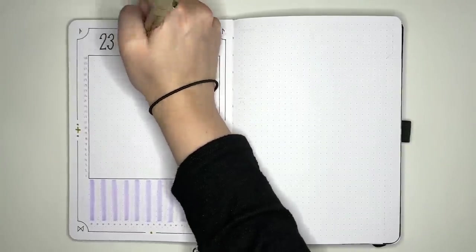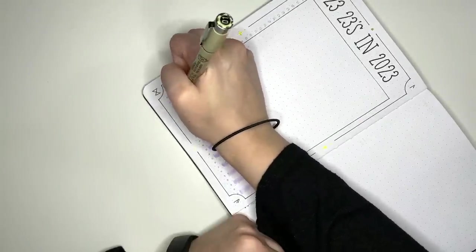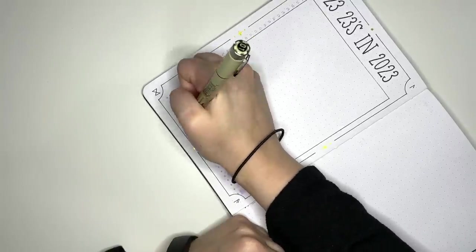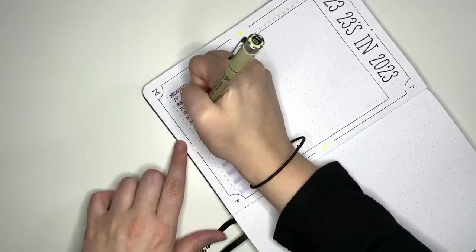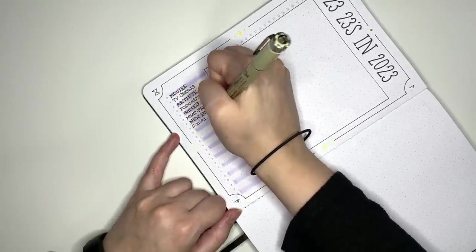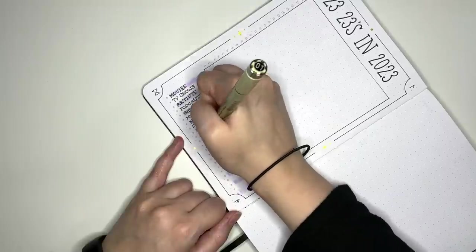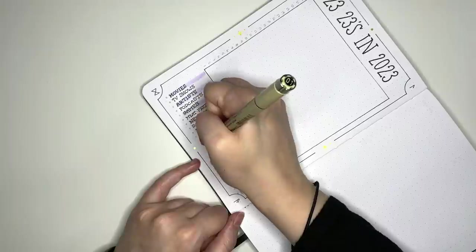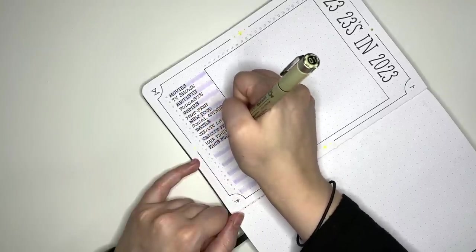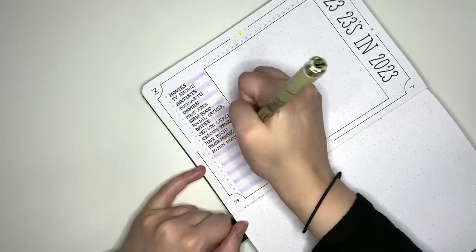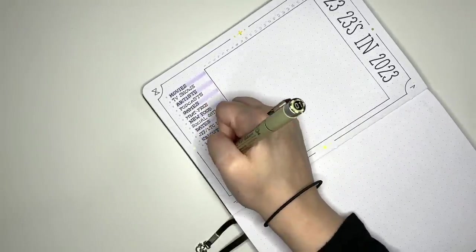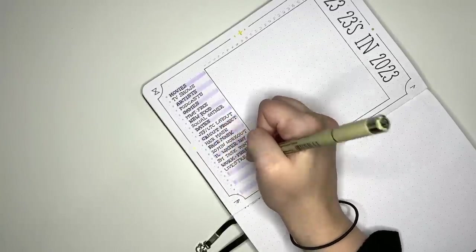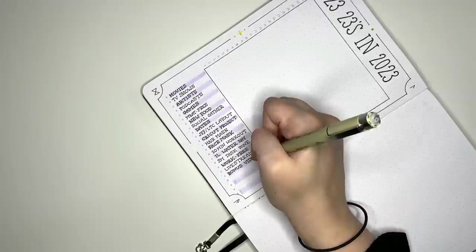So my full list of things are 23 movies watched, 23 TV show seasons watched, 23 new artists listened to in terms of music, 23 podcast episodes, games played, meat-free dinners, 23 new foods tried, social gatherings, dates, just for fun or long-term collection layouts in my journal, cricket projects, hair masks, face masks, 23 20 minute workouts, days where I drink one liter of water, someday maybe tasks done, work free days, live streams, 23 bonus videos, 23 collaborations, 23 products in my shop, 23 shop sales and 23 lots of $100 saved.